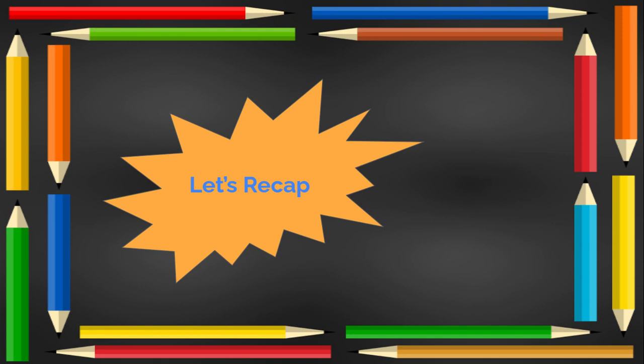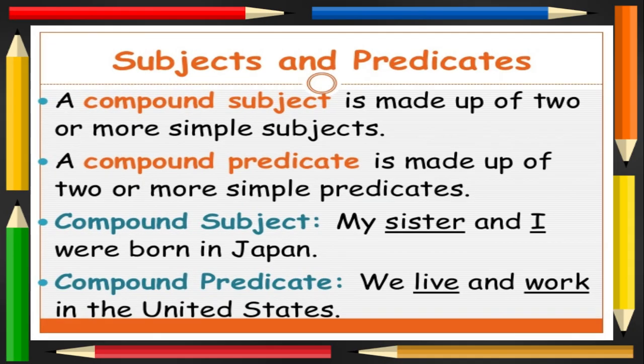Let's recap subjects and predicates. A compound subject is made up of two or more simple subjects. A compound predicate is made up of two or more simple predicates. A compound subject example: 'My sister and I were born in Japan.' And here is an example of a compound predicate: 'We live and work in the United States.'